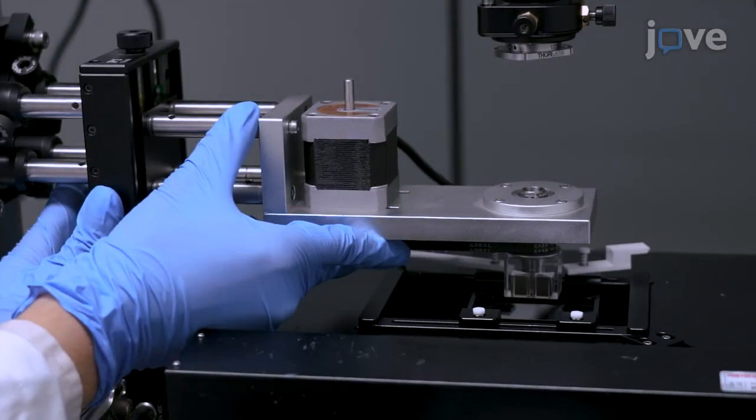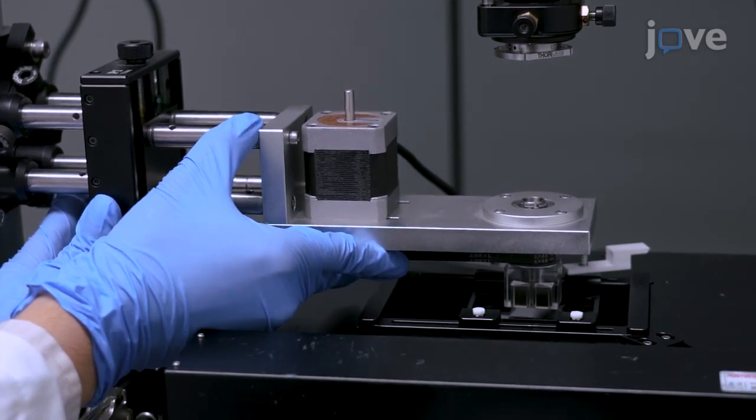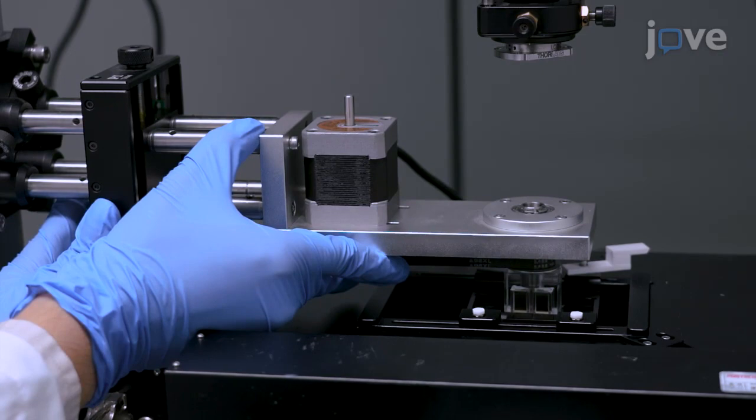Adjust the vertical position of the translation stage so that the magnet's bottom surface aligns with the sample plane at the lowest stage position.